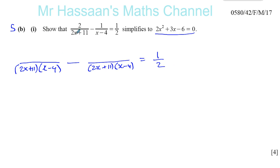Now, what did I have to do to the 2x plus 11 to make it become 2x plus 11 times x minus 4? Well, obviously I multiplied it by x minus 4, so I must do the same to the numerator.